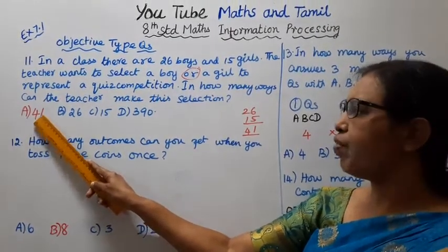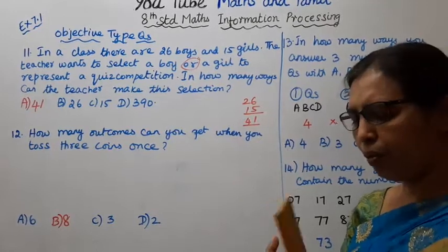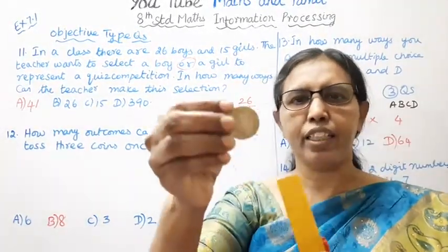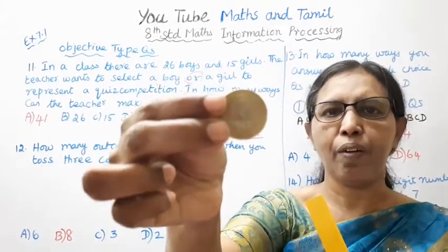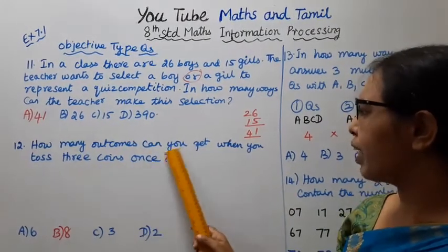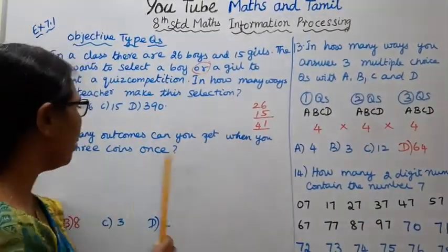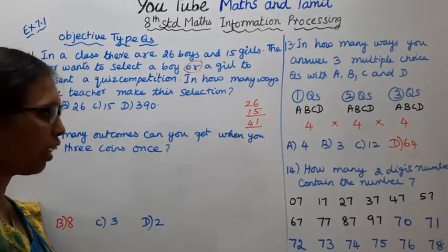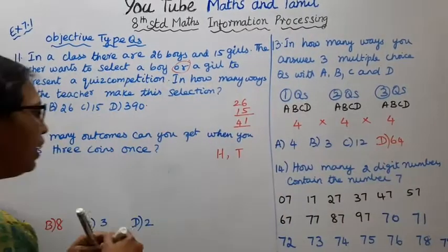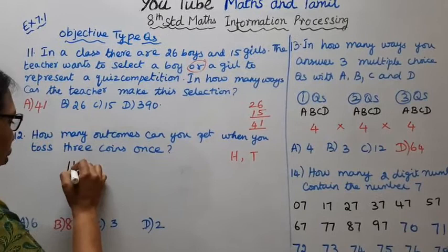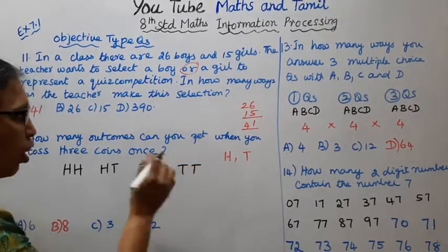Question 12: How many outcomes can you get when you toss three coins once? One coin is tossed — it gives head or tail. A second coin is added — head or tail. A third coin is added — head, head, tail, tail, tail, tail, tail, tail.